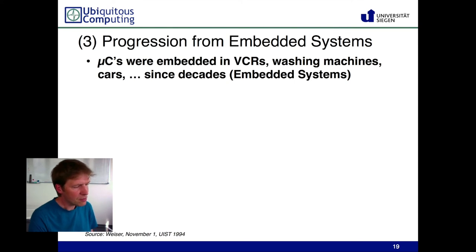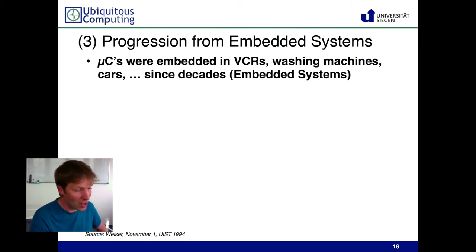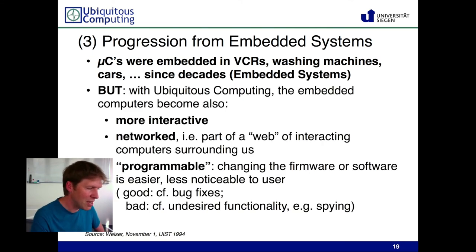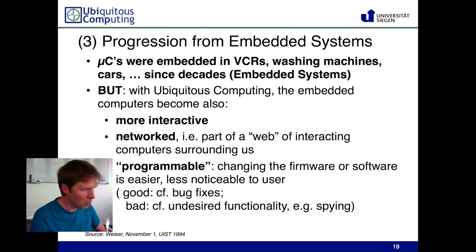Mark Weiser noted that embedded systems were already there for decades — microcontrollers were embedded in VCRs, washing machines, cars, etc. However, what Ubiquitous Computing added that was new was that interaction became the most important thing — perhaps even primary — versus embedding, scaling down, or reliability, which became secondary. The networked and programmable aspects were also extremely important for Weiser. He also talked about things that have only become more actual in the last decade and a half, such as the spying of people through their embedded devices.